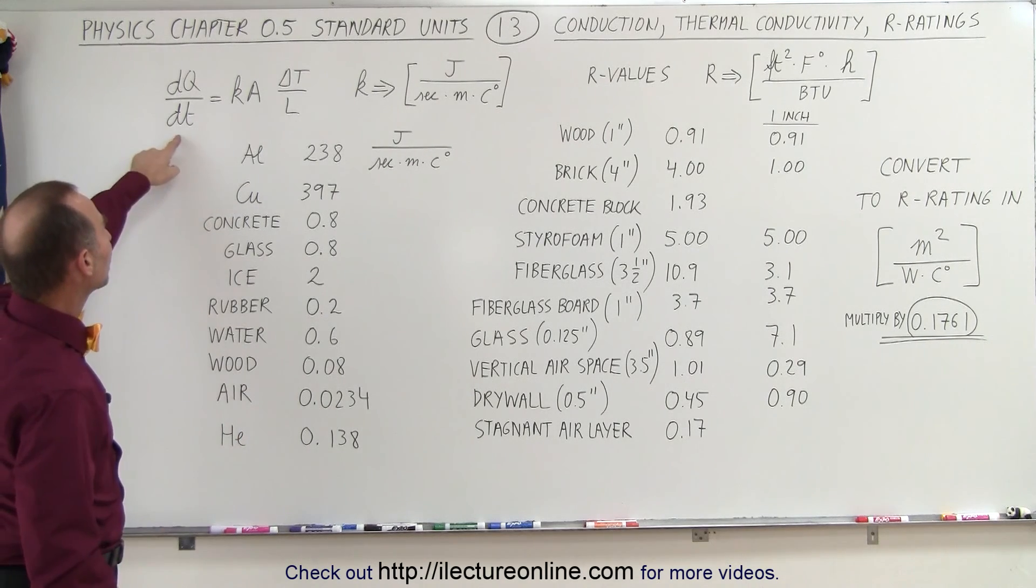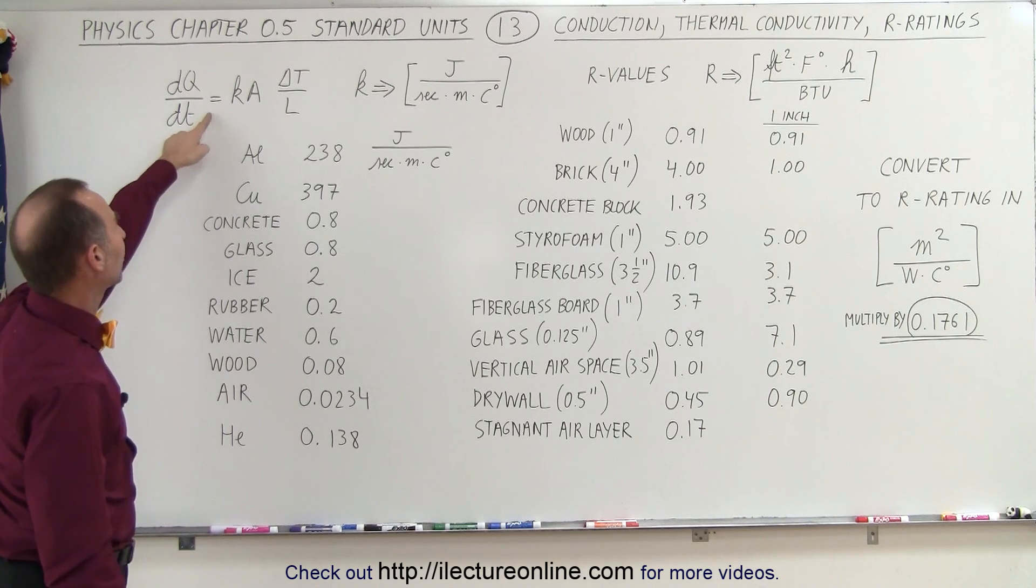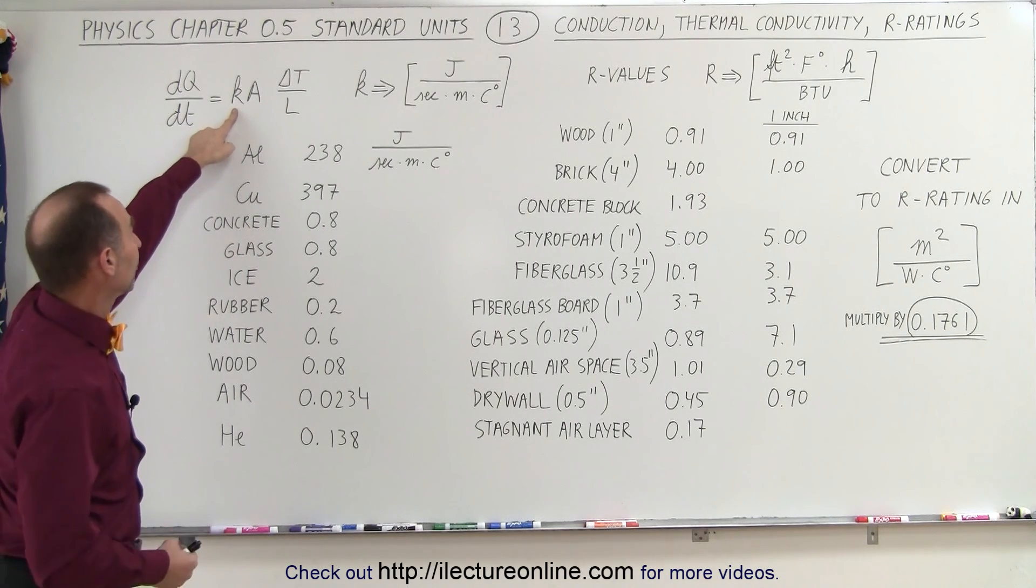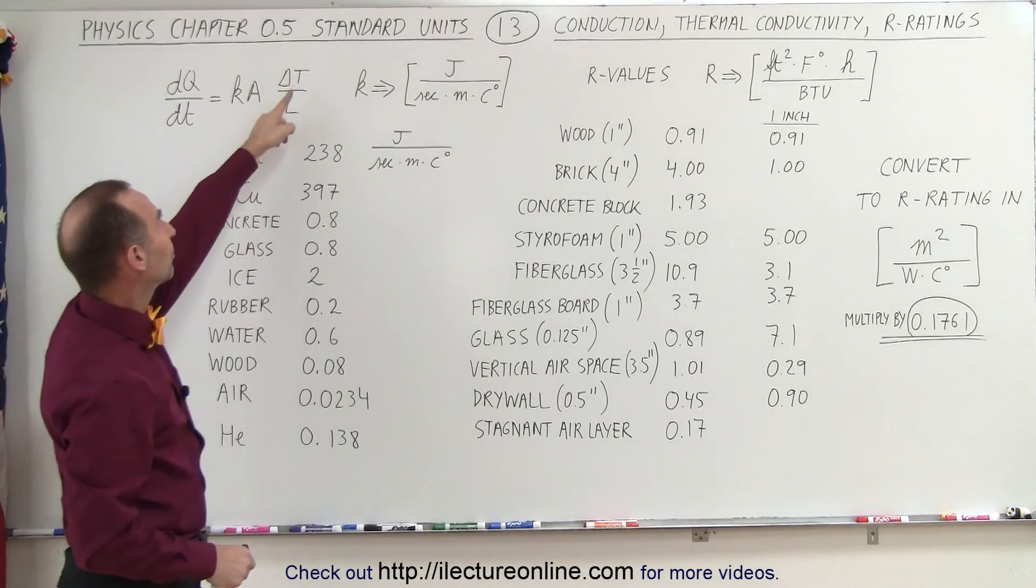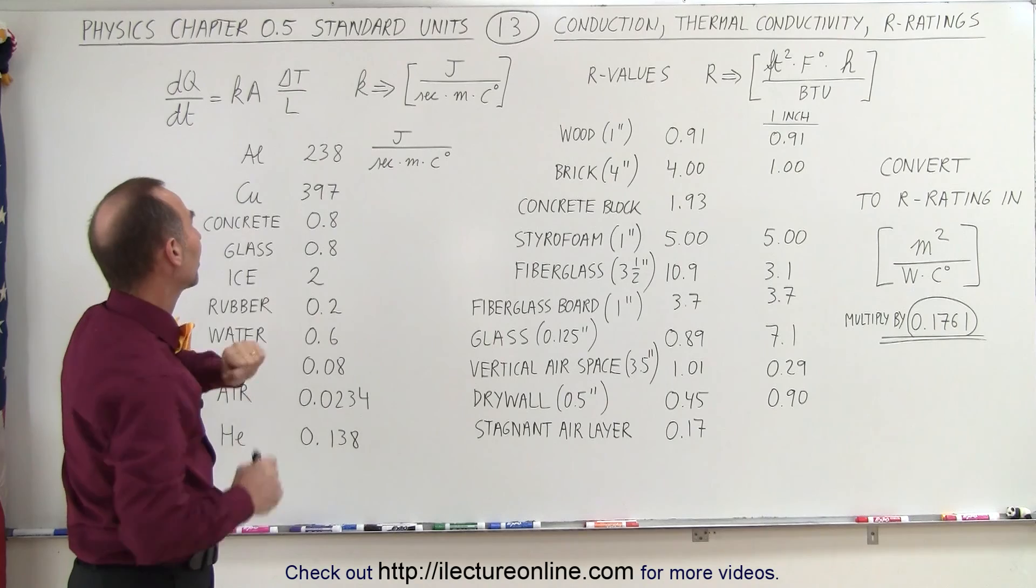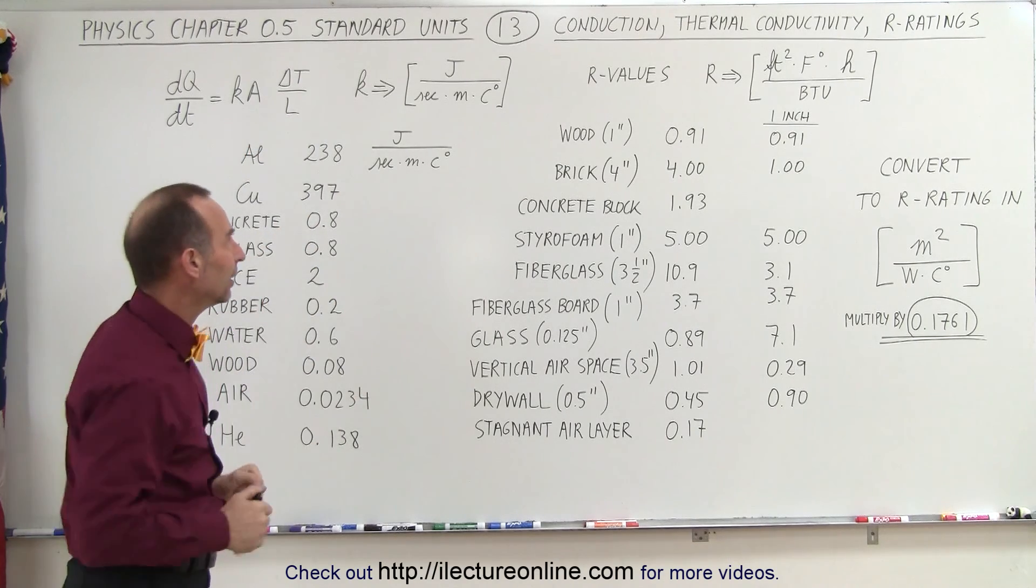we use the equation that the amount of heat per unit time passing through is equal to the conductivity constant of the material times the cross-sectional area times the temperature difference on both sides of the material divided by the path length L.